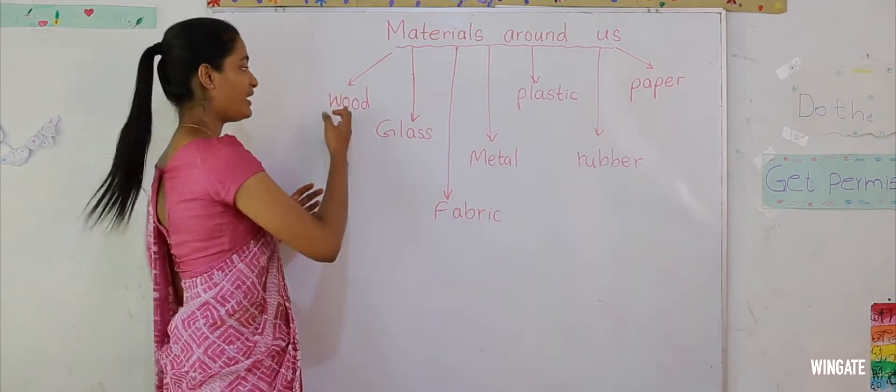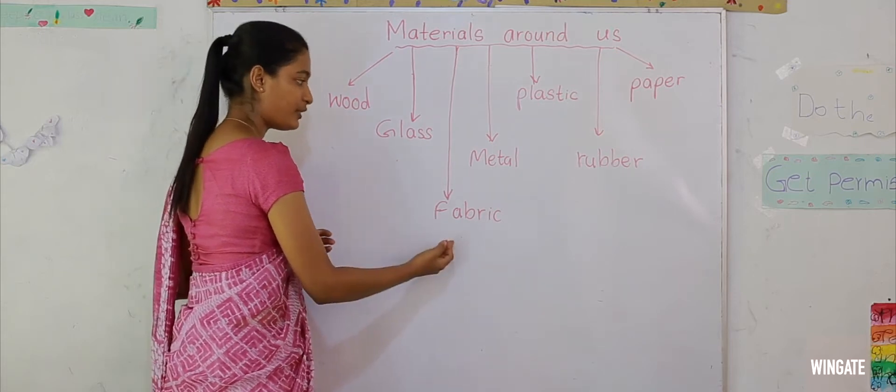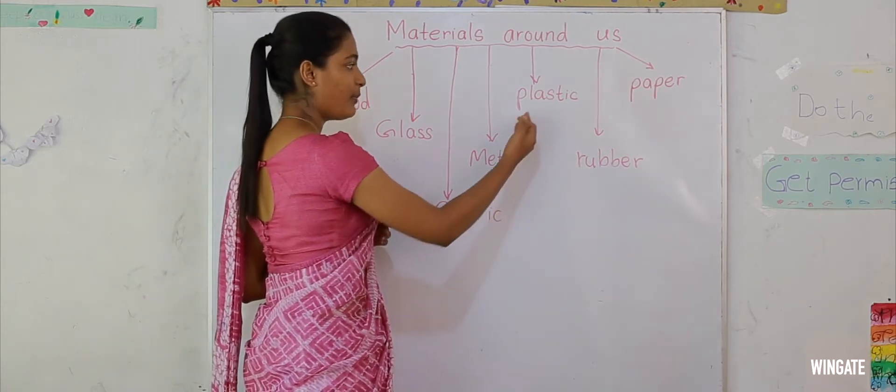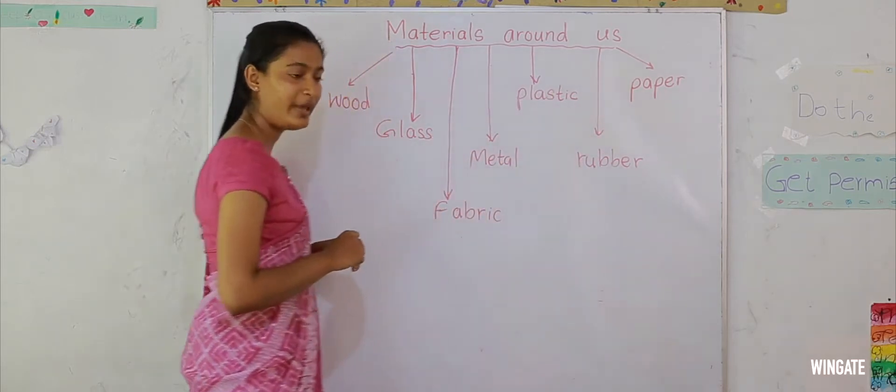Some objects are made of wood. Some are made of glass, fabric, metal, plastic, rubber, or maybe the object is made of paper.